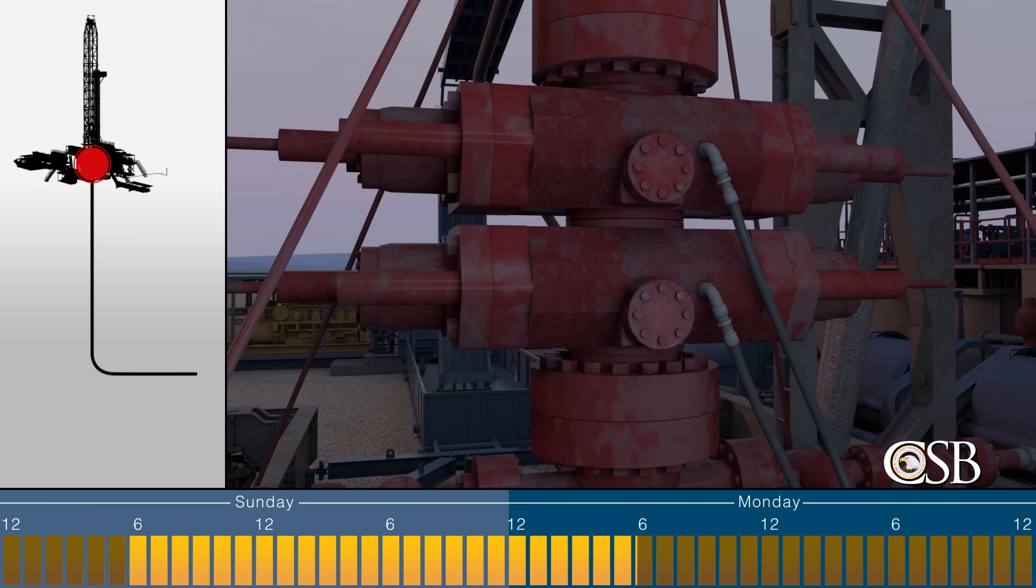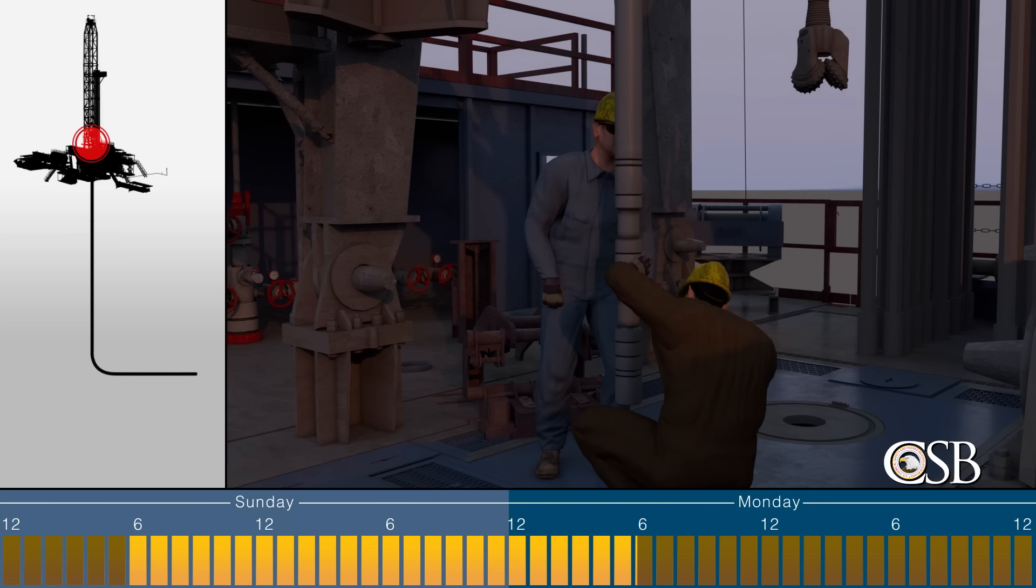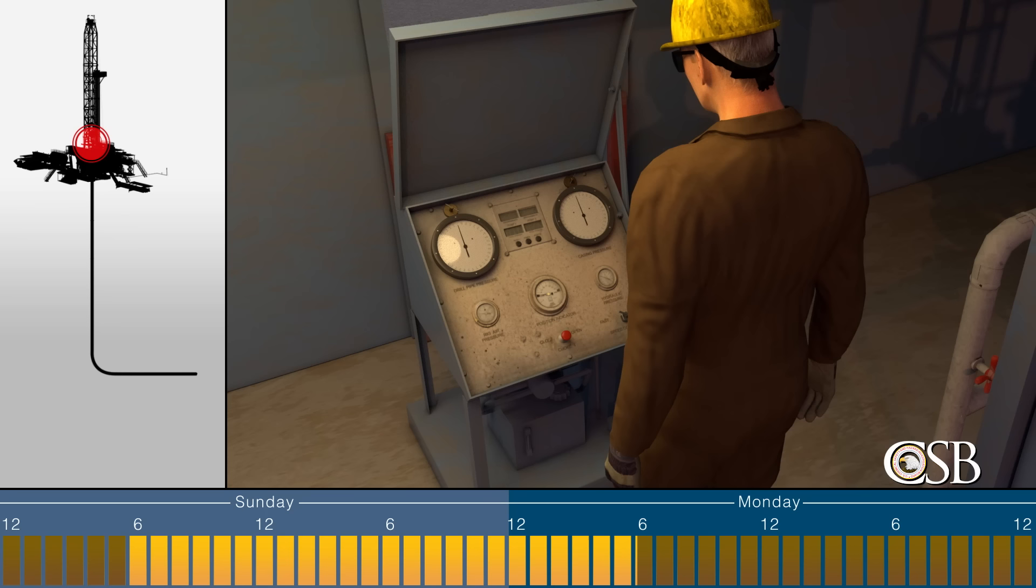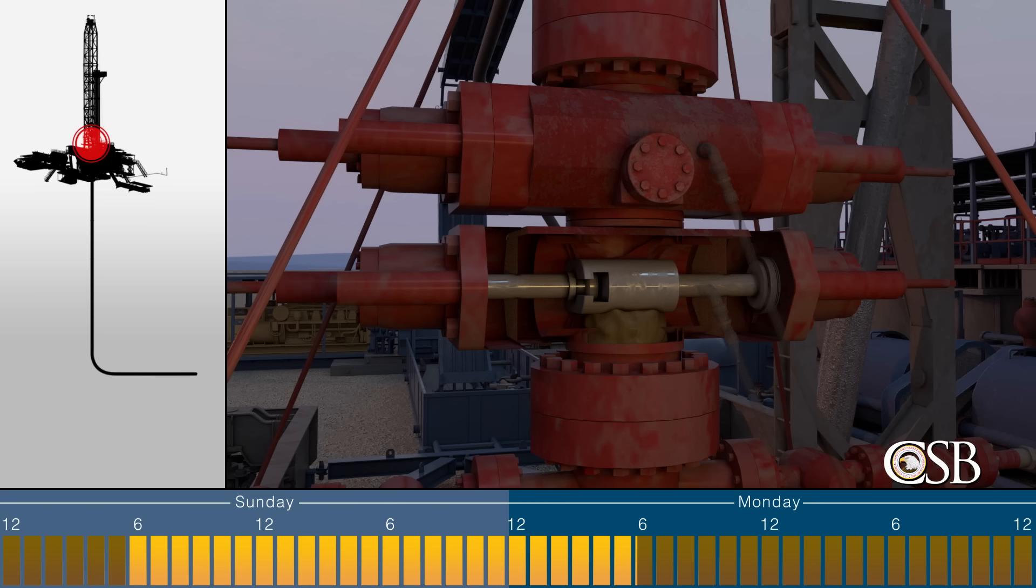At 6:10 a.m., the crew lifted the bottom hole assembly out of the well and closed the blind rams on the blowout preventer. They prepared a new bottom hole assembly for testing. When it was ready, a drilling crew member checked a pressure gauge on the rig floor to see if it showed pressure in the well, a safety precaution used before opening the blowout preventer. The pressure gauge showed no pressure.